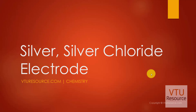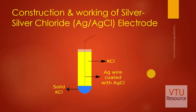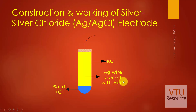Silver silver chloride electrode is an example of a metal-metal salt ion electrode. The Ag/AgCl electrode consists of a silver wire coated with the sparingly soluble salt AgCl. This coated silver wire is dipped in a solution containing the anions of the salt — chloride ions — so the silver wire coated with AgCl is dipped in KCl solution.